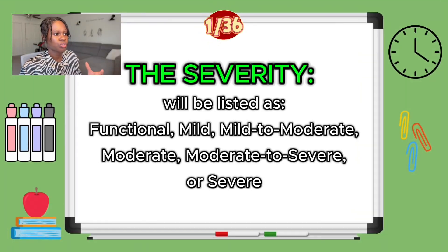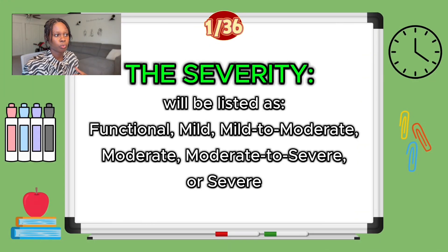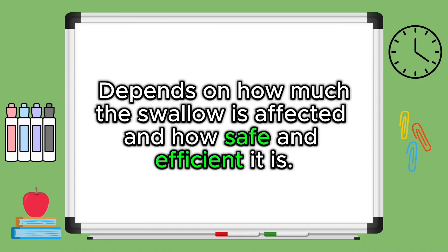The severity of your swallowing impairment will be listed as either functional, mild, mild to moderate, moderate, moderate to severe, or severe. This depends on how much the swallow is actually affected and how safe and efficient it is.